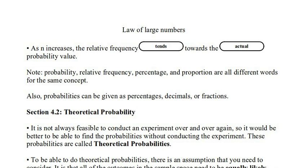That word tends means that in the aggregate, as n increases, that relative frequency gets closer towards the actual value. Now, why don't we just say gets closer? Why do we use the word tends? We use the word tends because it doesn't necessarily always get closer.